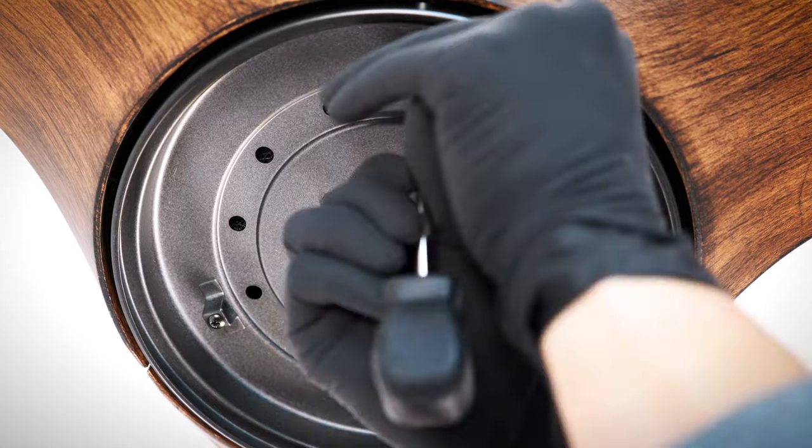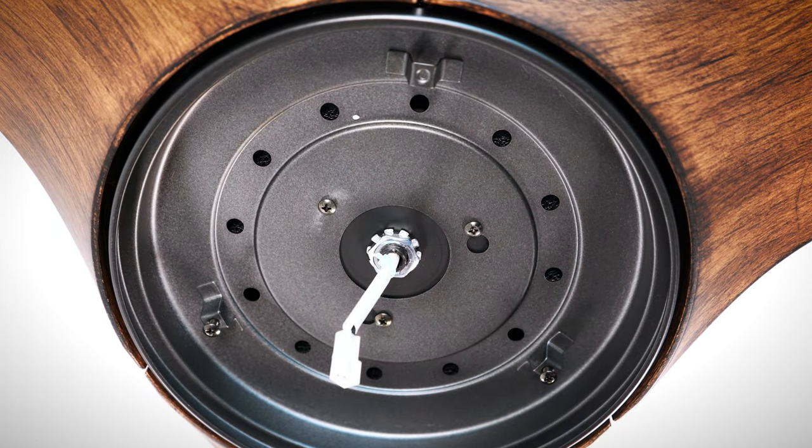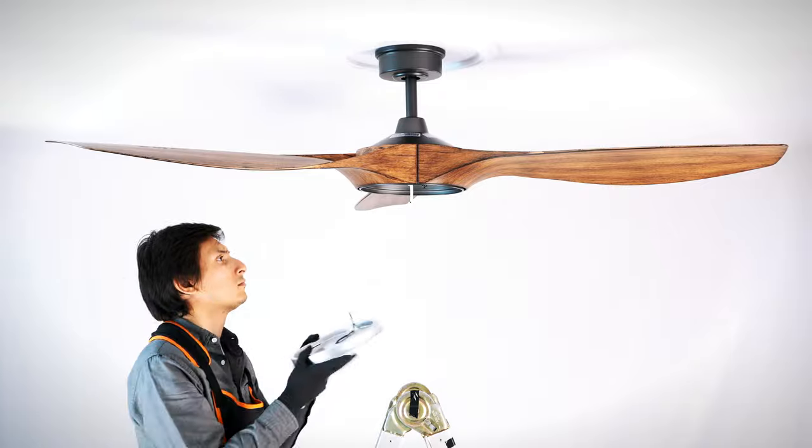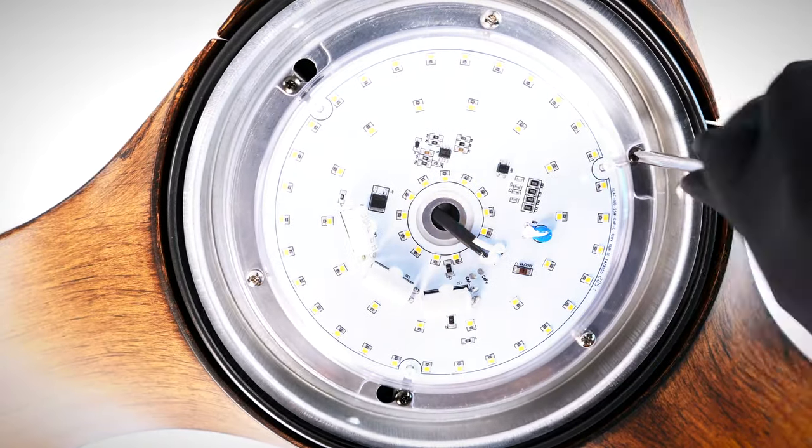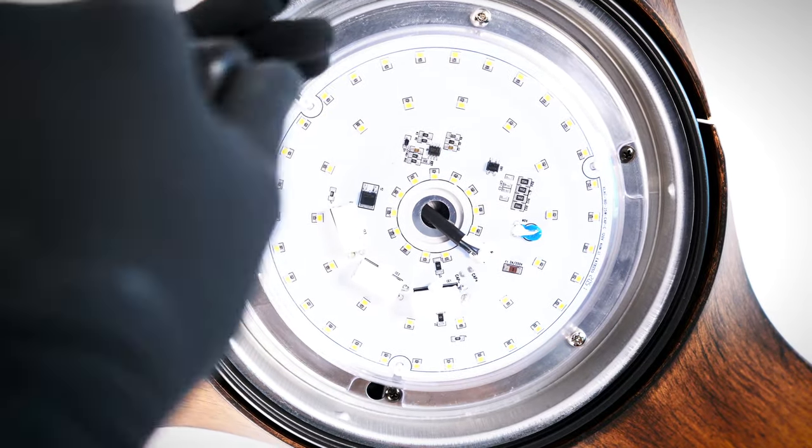Remove one of the screws from the mounting plate and loosen the remaining screws. Bring the LED light kit up to the fan and connect the two pin wire connectors. Align and twist over the loose screws, then insert the removed screw and tighten all screws securely.